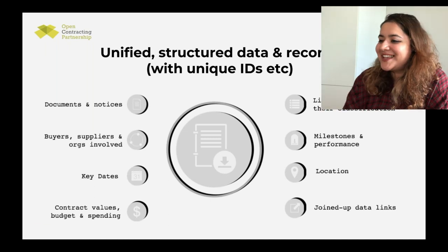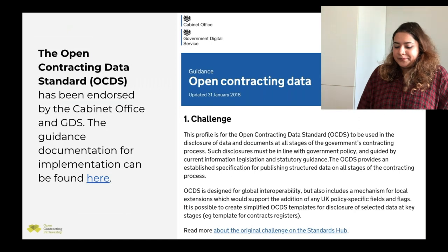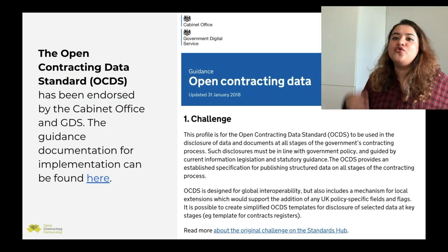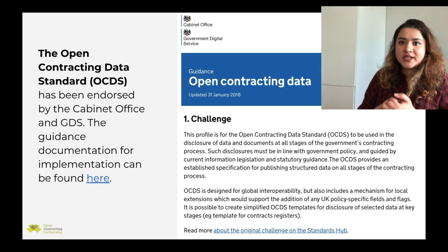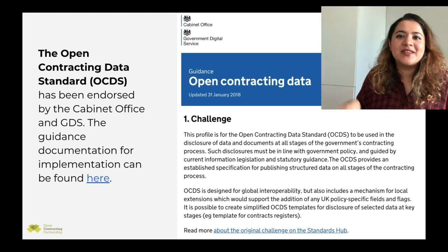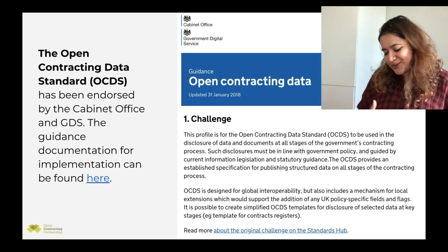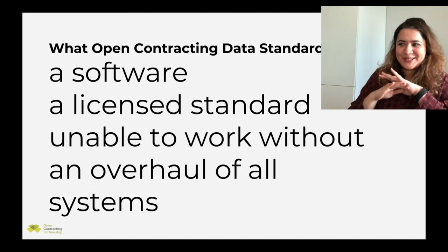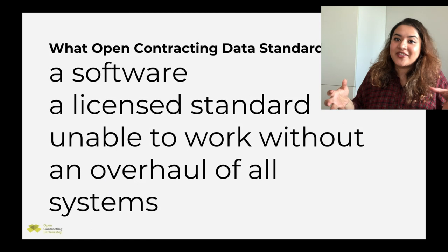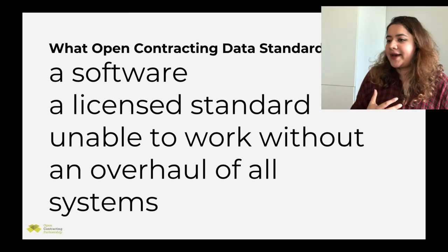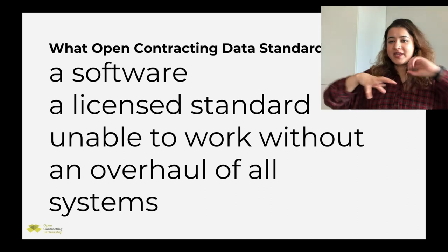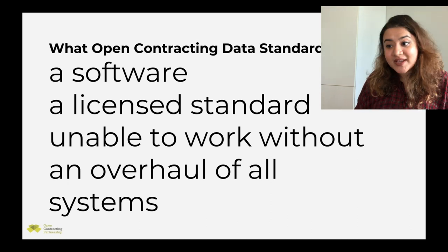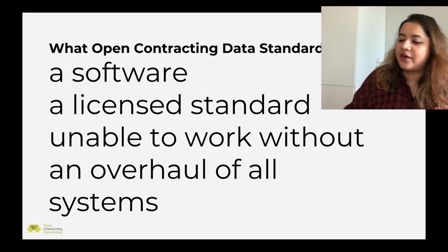The OCDS standard contains data fields like documents — tender and planning documents — key dates such as tender release, bid submission deadline, and award date; contract start and end dates; locations of the supplier, buyer, and project site; contract values, budget, and spending line items; and classifications of what is being procured. The UK government has officially endorsed OCDS as their standard for presenting procurement data. It is not software — it is free, open source, and works with existing systems.